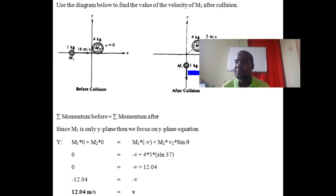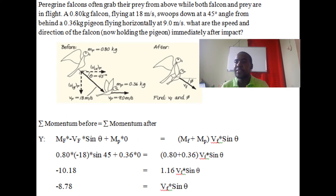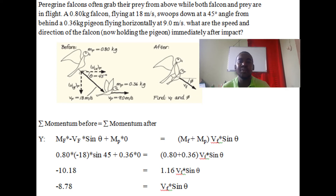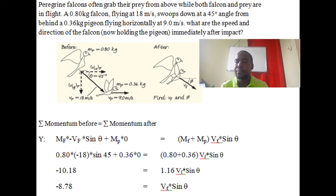Question two: we have a falcon moving down at 45 degrees to catch a pigeon. Once the falcon catches the pigeon, they both move together at a different angle with a different velocity. The question is two-part: find the final velocity and angle. Because they move together, this is an inelastic collision. Momentum before equals momentum after — always start with that statement.